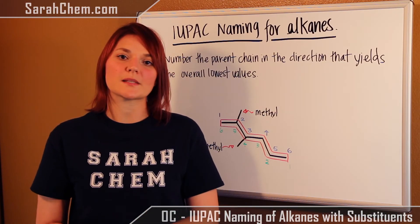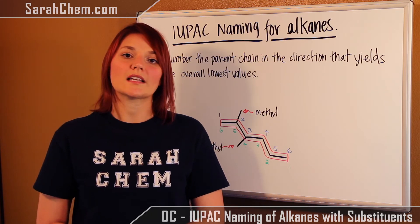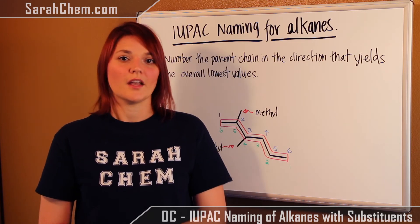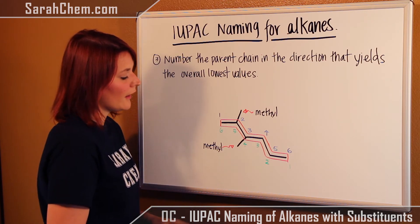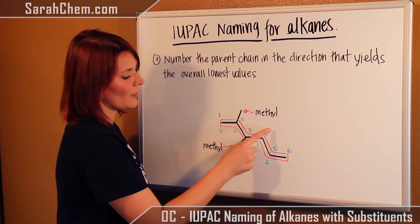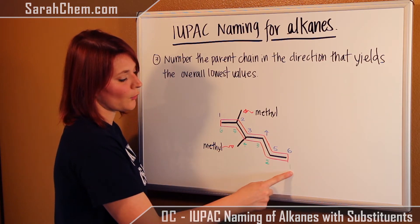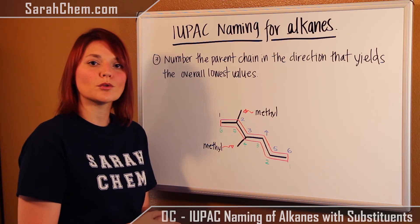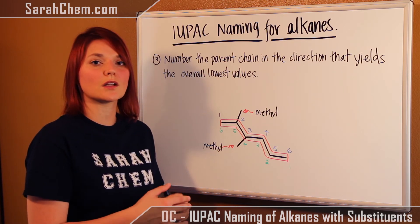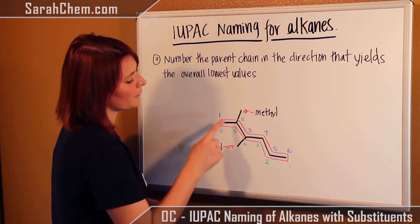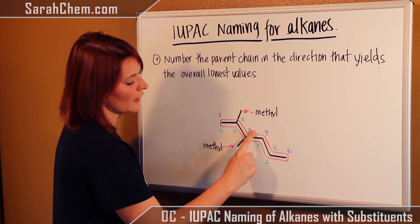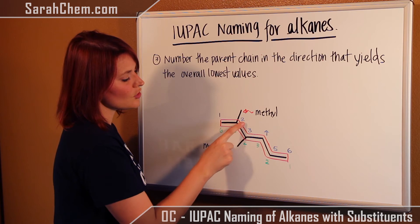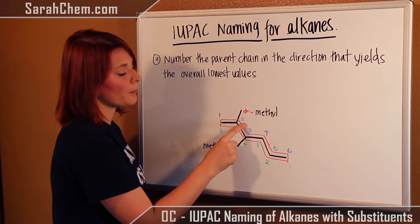Now we need to indicate where in the parent chain each substituent is located by numbering the parent chain. There are two ways to number it: the blue numbering goes 1, 2, 3, 4, 5, 6 from one end, and the green numbering goes 1, 2, 3, 4, 5, 6 from the other end. The rule says we choose the numbering that gives substituents the lowest possible numbers. In the blue case the substituents are at positions 2 and 3; in the green case they'd be at positions 4 and 5. Because 2 and 3 are lower than 4 and 5, we go with the blue numbering.